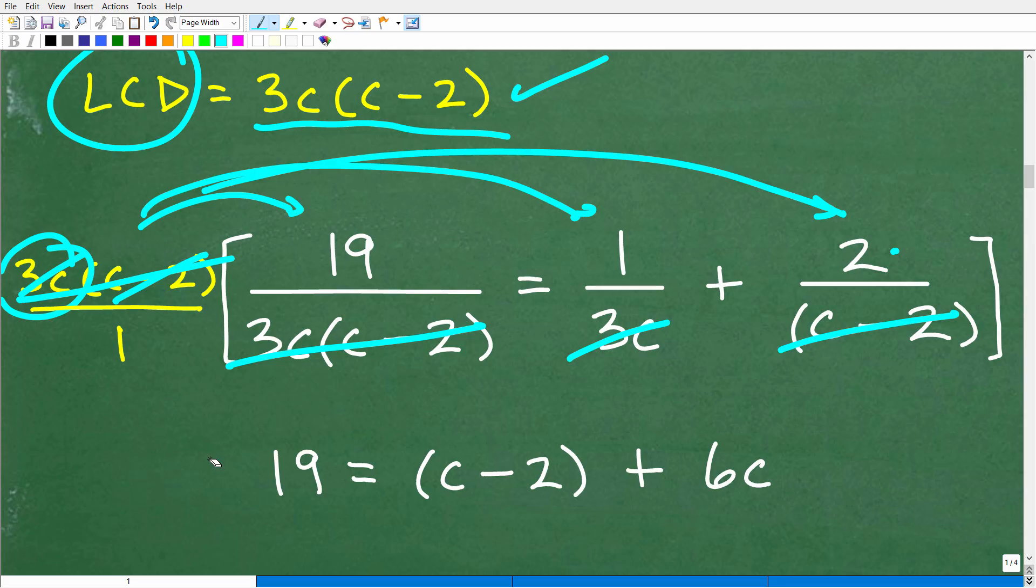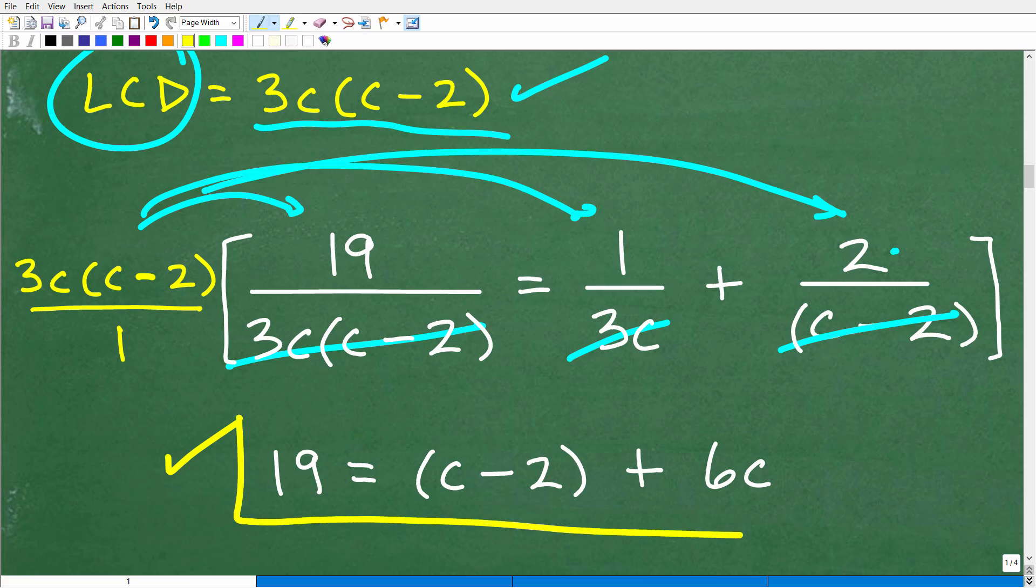Okay, so you can obviously pause the video and walk through this step by step to make sure you understand this stuff, but this is how we multiply this term right here by all this stuff to clear the fractions. All right, so all that work led us to this lovely equation right here. 19 is equal to C minus 2 plus 6C, and now we have a lovely linear equation.